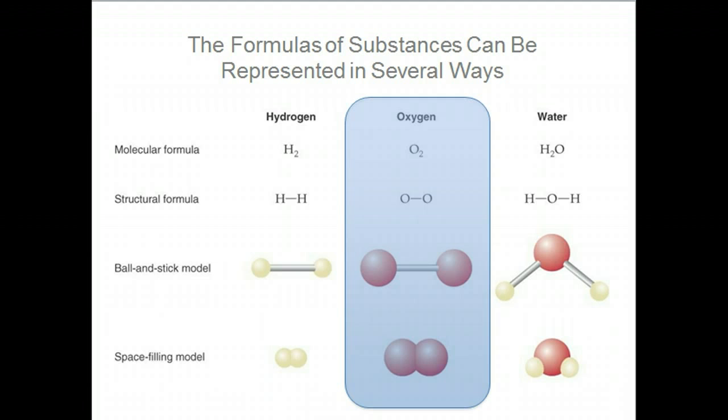Chemists write in a shorthand using a one or two letter symbol for each element. We combine symbols to describe a compound's composition. Using hydrogen, oxygen, and water as examples, this slide shows four ways to represent the composition of substances. It also shows that water is composed of hydrogen and oxygen in a fixed ratio of two to one. The number of atoms in a particular molecule is given as a subscript.